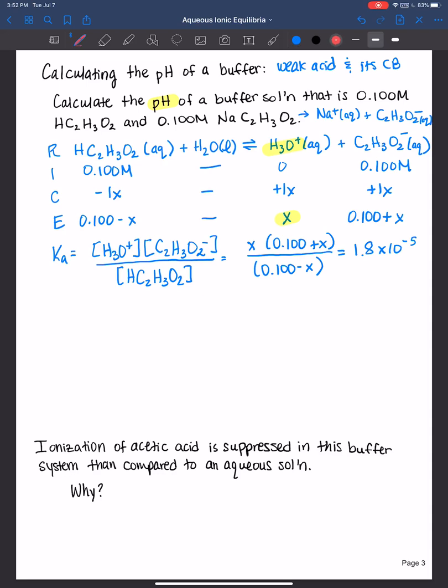Now I'm going to assume that x is small enough to ignore. And in that case, x is equal to 1.8 times 10 to the negative 5th. The trick I've taught you in a previous video is to divide by the initial concentration. It doesn't matter which one here, they're both the same.